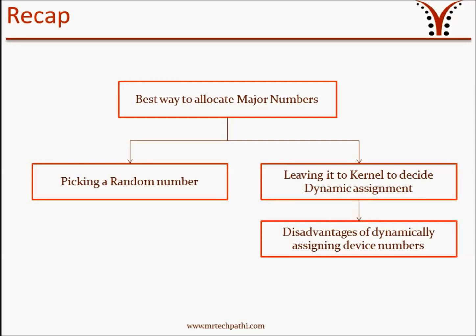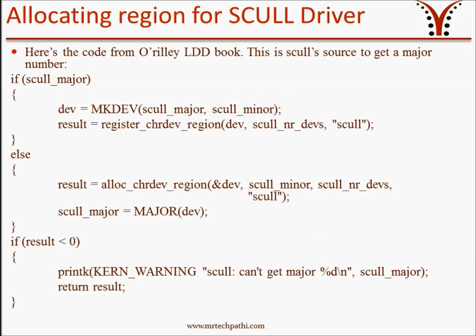With this information in hand, let's apply these concepts to our sample Scull driver. Here is the code from the O'Reilly Linux Device Driver book. As discussed in Part 12, we'll code small snippets of the Scull driver during the learning process and integrate them at the end. We use skull_major and skull_minor global variables to hold the major and minor numbers. The code first checks if a major number is defined or defaults to 0. If it is defined, it uses the MKDEV macro to embed major and minor numbers into a dev_t structure, then registers the Scull device region using register_chrdev_region with the known major number — this is manual assignment.